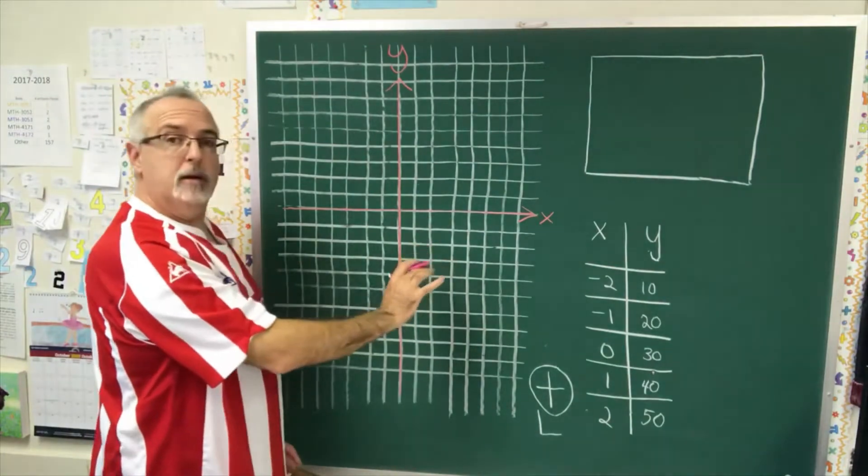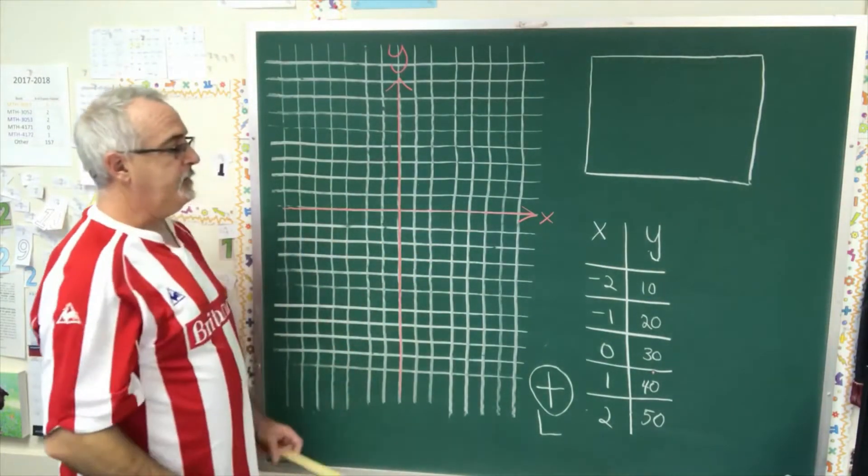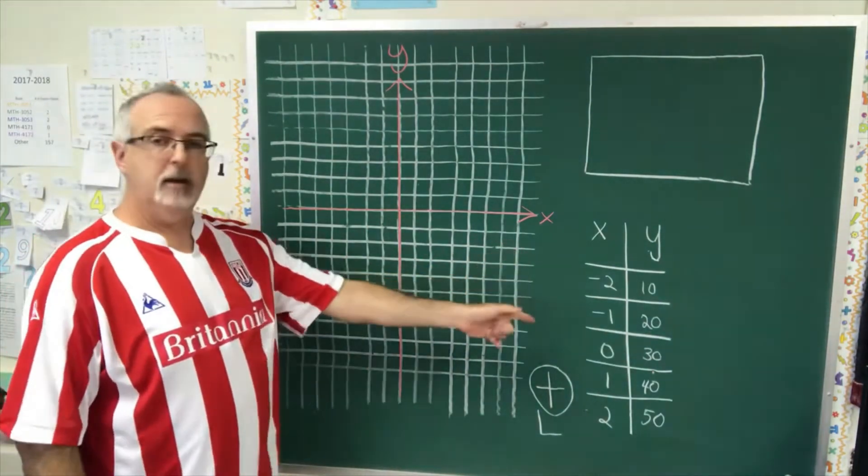Make sure you do that. You don't have to put arrows on the left side or on the bottom. Now, how do I want to scale these axes?